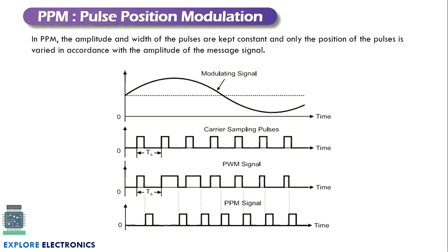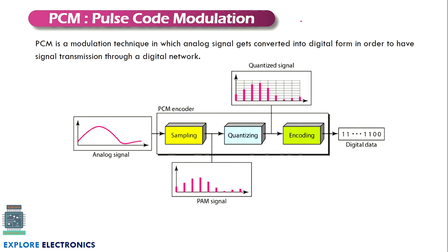The next technique is pulse position modulation, PPM. It looks similar to PWM, but there is a difference: in PPM the amplitude is constant and it is pulse-like, but the width of the signal is also constant. What varies is the position of the pulses — the duration or gap between each pulse depends on the amplitude of the modulating signal. The amplitude and width of the pulses are kept constant; only the position of the pulses is varied. That is why it is called pulse position modulation.